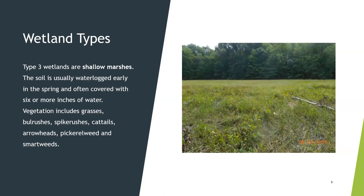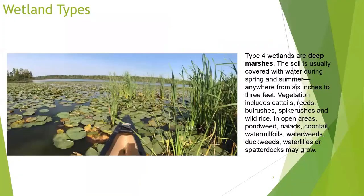Type 3 wetlands are shallow marshes — they usually have water or waterlogged soils through a large duration of the growing season, usually six inches or more. This is where we start to see sedges, cattails, and arrowhead. Type 3, 4, and 5 wetlands have more restrictions on them. Type 4 wetlands are deep marshes — they usually have water throughout the growing season. This is where you start to see more cattails, reeds, and bulrushes.